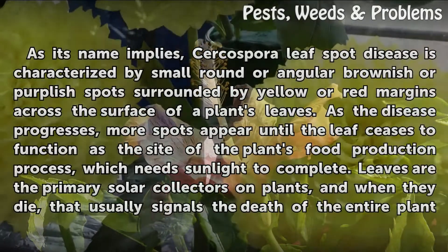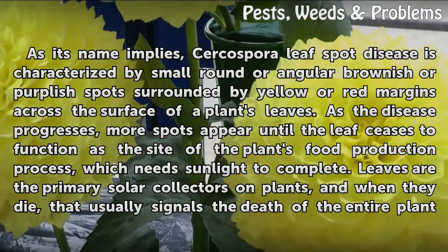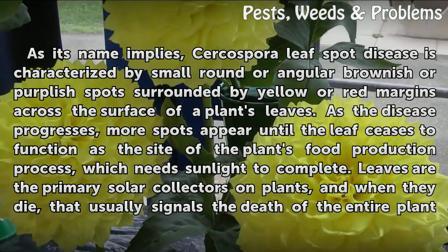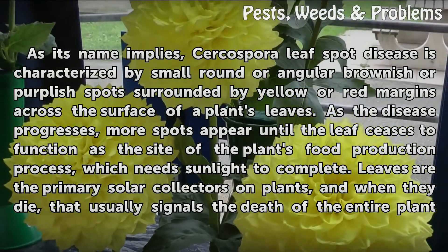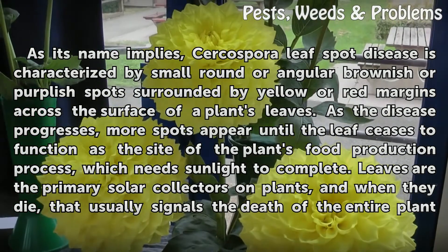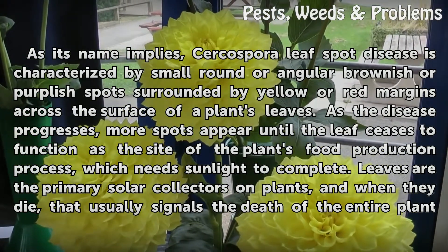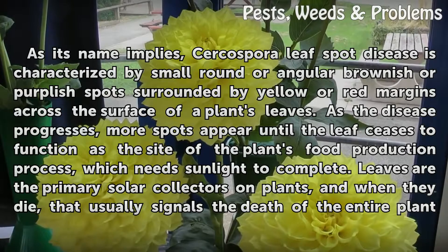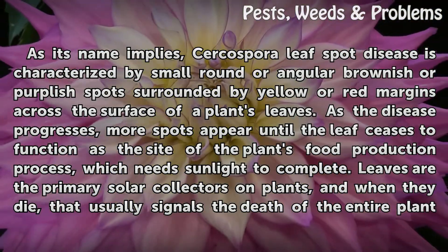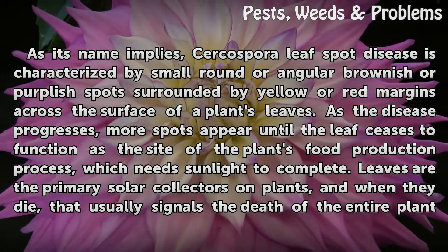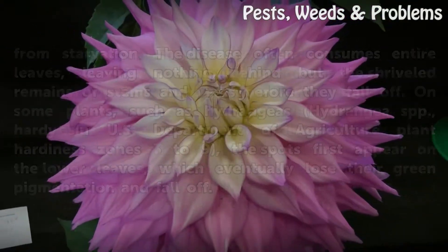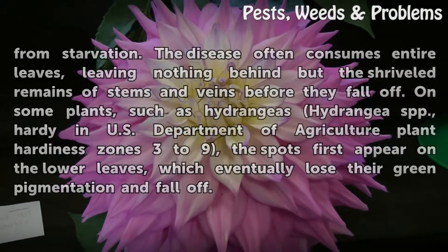Cercospora leaf spot disease is characterized by small round or angular brownish or purplish spots surrounded by yellow or red margins across the surface of a plant's leaves. As the disease progresses, more spots appear until the leaf ceases to function as the site of the plant's food production process, which needs sunlight to complete. Leaves are the primary solar collectors on plants, and when they die, that usually signals the death of the entire plant from starvation.